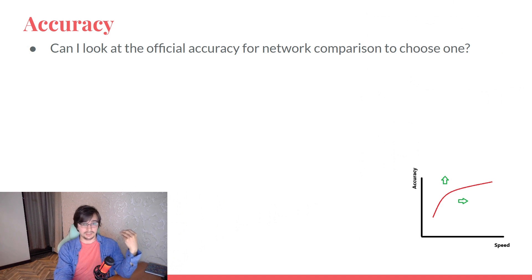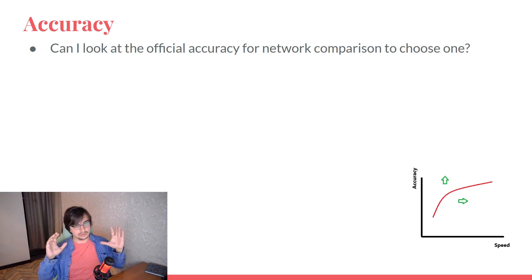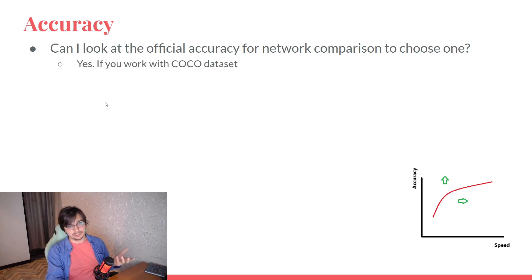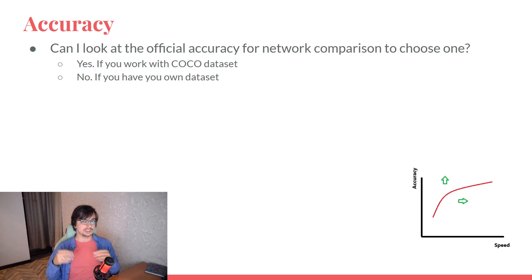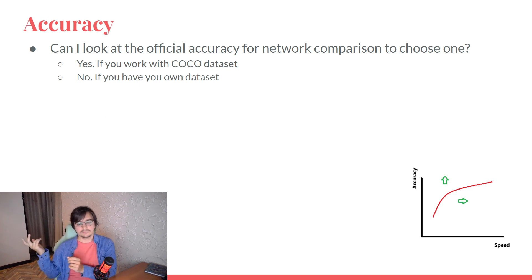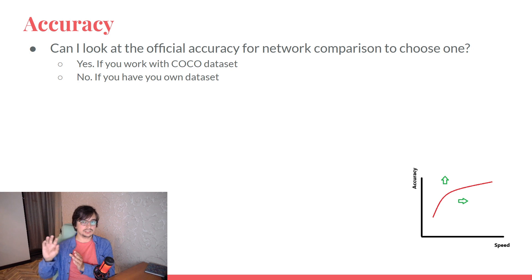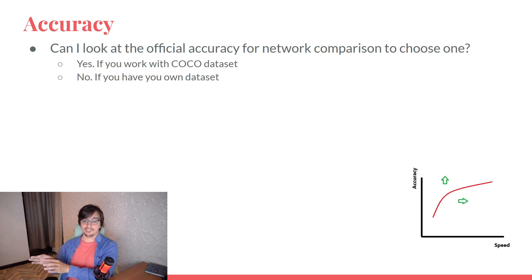When we speak about all of this, we should start from accuracy. The first simple question is: is the accuracy shown on these graphs real? Of course it's real, but it's measured on the COCO dataset. When you have your own dataset, you need to retest accuracy — it will usually be a bit different. But across networks at the same performance level, the difference is usually just a few percent, so choosing the best network on COCO may not significantly affect results on your dataset.